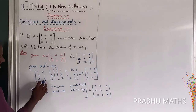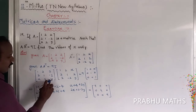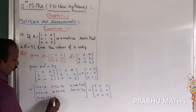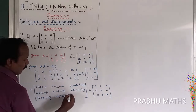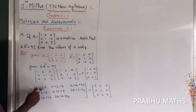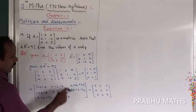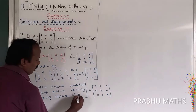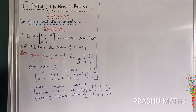Third row, first column: X×1 + 2×2 + Y×(-2) = X + 4 - 2Y. Third row, second column: X×2 + 2×1 + Y×(-2) = 2X + 2 - 2Y. Third row, third column: X×X + 2×2 + Y×Y = X² + 4 + Y².